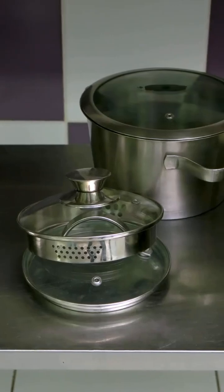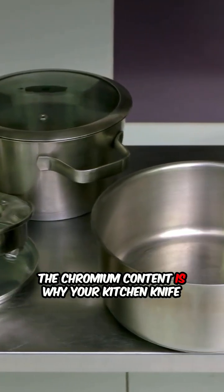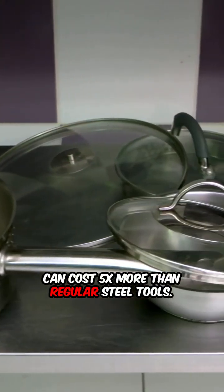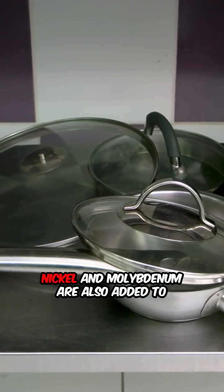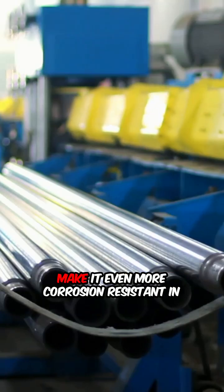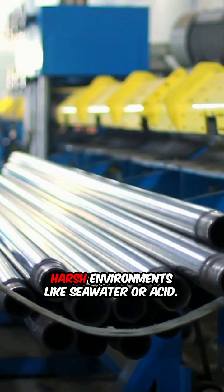Fun fact: the chromium content is why your kitchen knife can cost five times more than regular steel tools. Nickel and molybdenum are also added to make it even more corrosion resistant in harsh environments like seawater or acid.